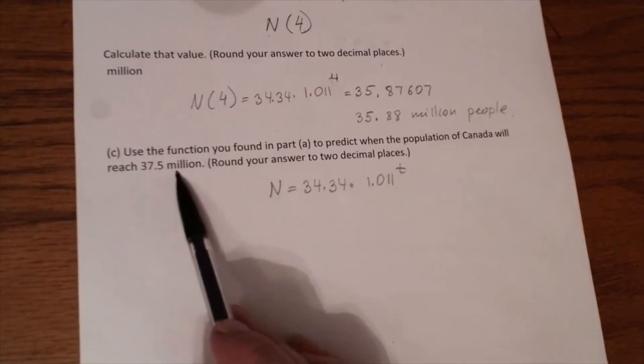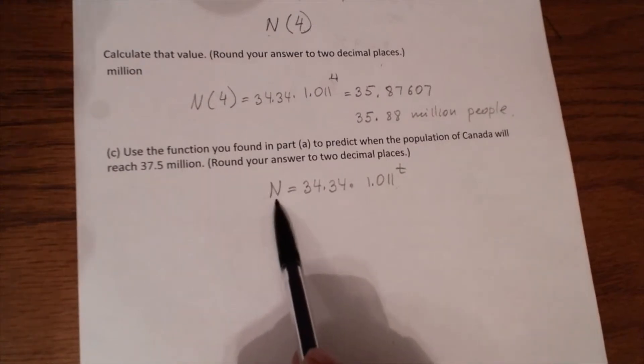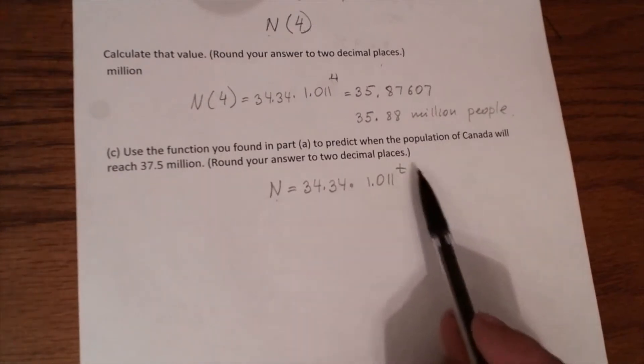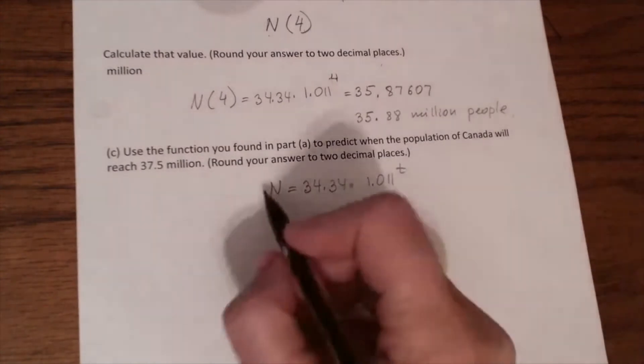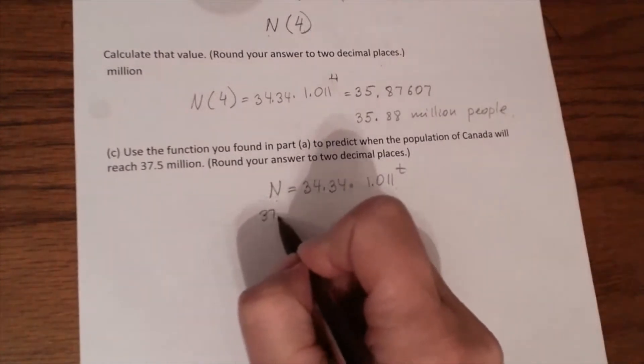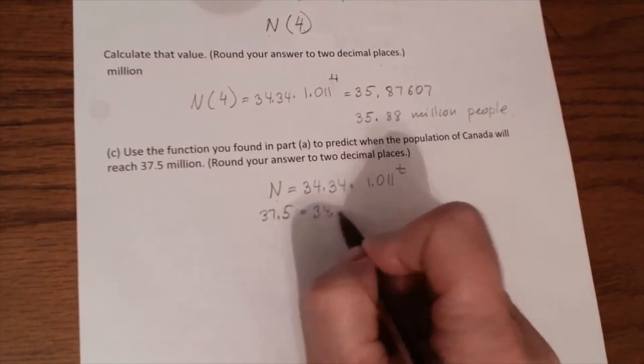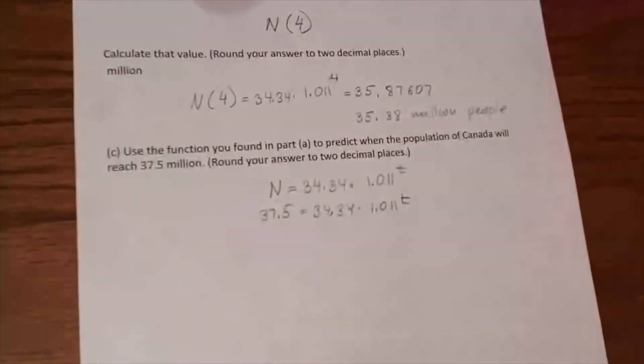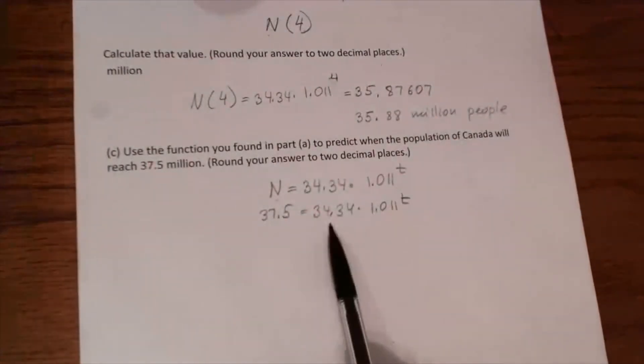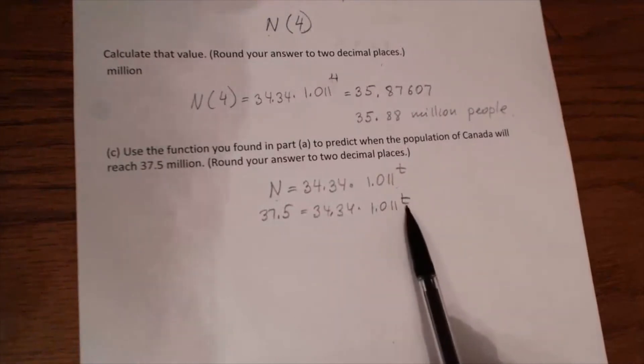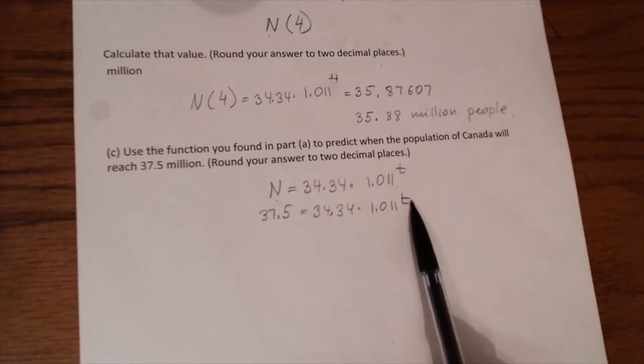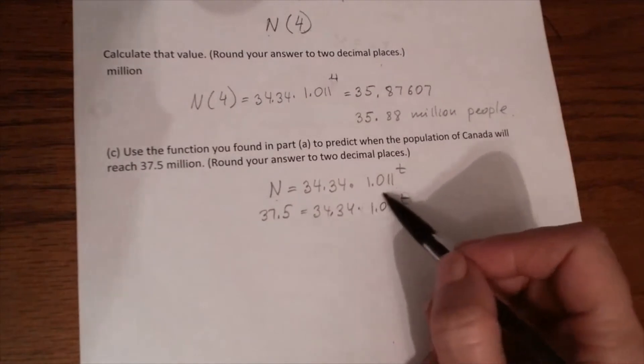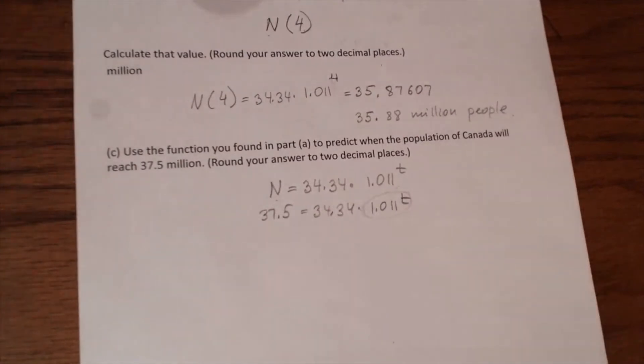So 37.5 million, is this population or is it time? Yes, it's a population. So we have to substitute it for N. This is an exponential equation because our variable T is an exponent. And to solve this equation, we have to have the base to the exponent by itself on one side.